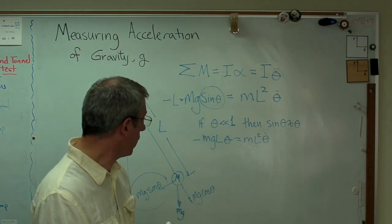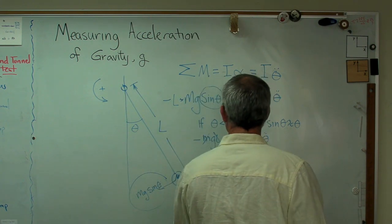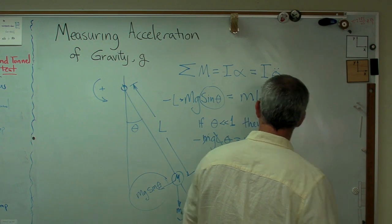That's a whole lot easier to solve. I can also cancel the masses out, and I can cancel one of the L's out. So I have negative G theta equals L theta double dot. This is about as simple as differential equations get.